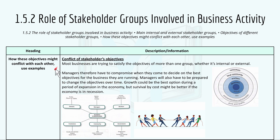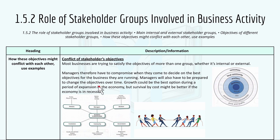How these objectives might conflict with each other: most businesses are trying to satisfy the objectives of more than one group, whether internal or external. Managers therefore have to compromise when deciding on the best objectives for the business they are running, and will also have to be prepared to change objectives over time. Growth could be the best option during a period of economic expansion, but survival through cost-cutting might be better if the economy is in recession, as seen in 2020 to 2021.